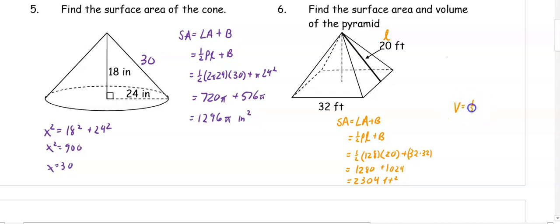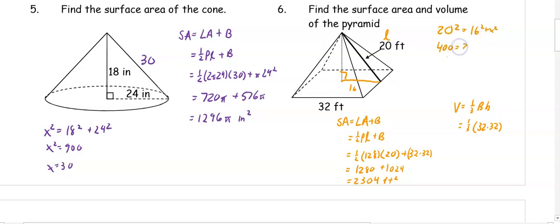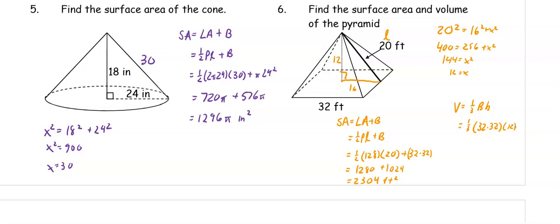The volume is one third base area times height. So we have one third times 32 times 32. To get our height, we know that half of the side is 16, so we do Pythagorean theorem: 20 squared equals 16 squared plus x squared. 400 equals 256 plus x squared. 144 equals x squared, so x is 12. So our height is 12. When we multiply 32 times 32 times 12 times one third, we get 4096 feet cubed.